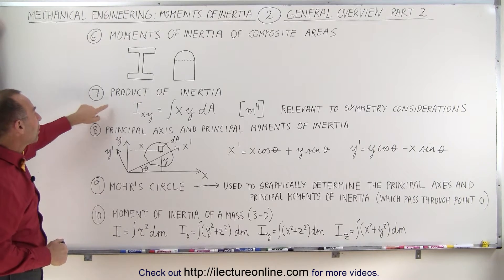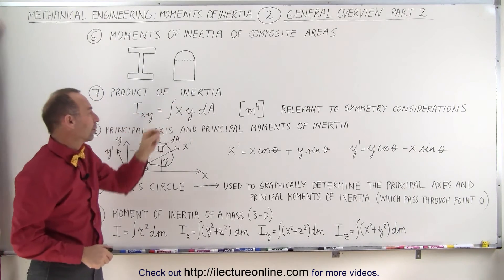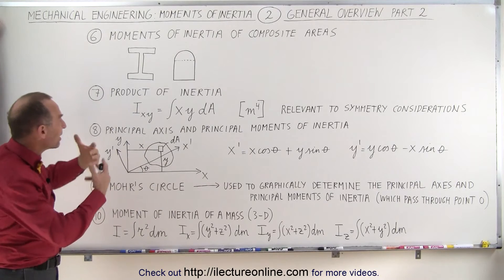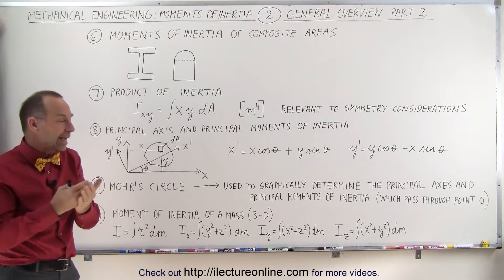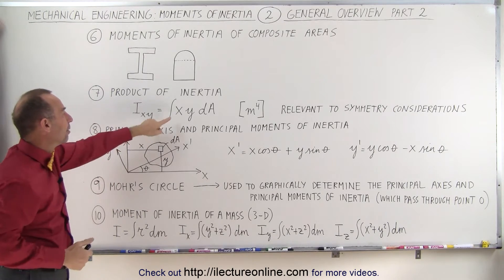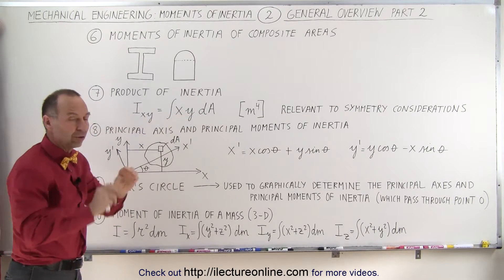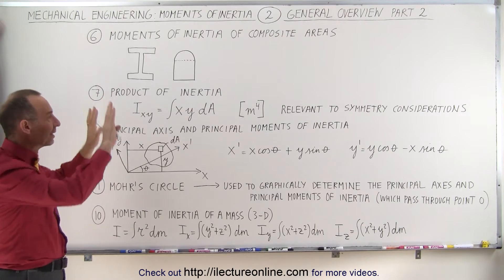Next we also will be looking at what we call the product of inertia. So here we're finding basically the moment of inertia such that we find both the distance to the x and the y-axis. We multiply those together, multiply times the dA, the small area element, and now integrate over the entire area.